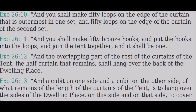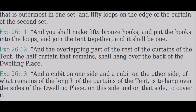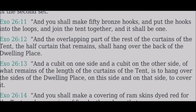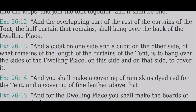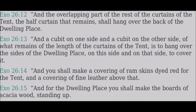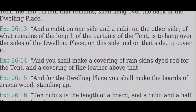The overlapping part of the rest of the curtains of the tent — the half-curtain that remains — shall hang over the back of the dwelling place. A cubit on one side and a cubit on the other side of what remains of the length of the curtains of the tent is to hang over the sides of the dwelling place, on this side and on that side, to cover it.